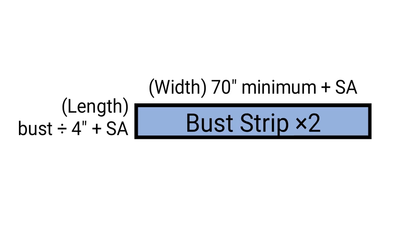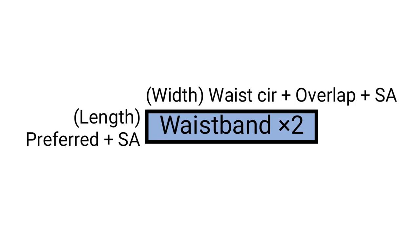The second rectangle to cut out is for your bust strip, and you need two rectangles for that. The width of each rectangle should be a minimum of 70 inches plus 2 inches for seam allowance. The length of your bust strip rectangle should be your bust circumference divided by 4, plus 2 inches seam allowance as well.